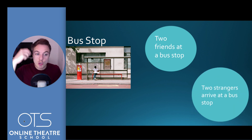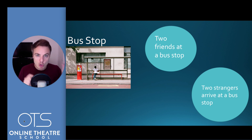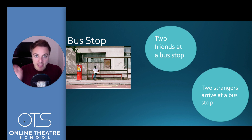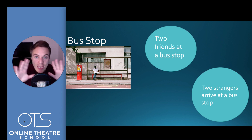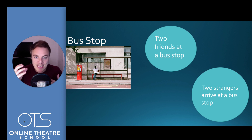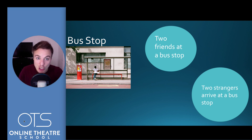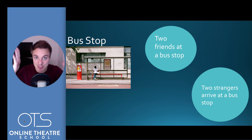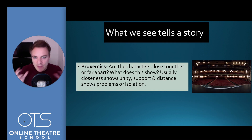Then two strangers arrive at the bus stop. Do those two strangers stand next to the two friends? Probably not — they'll probably find somewhere else near the bus stop where they're a bit distant. Again, without anyone having to say a word, I would automatically know that those two strangers didn't actually know the two friends by the way they'd use the space and distance between the two characters.